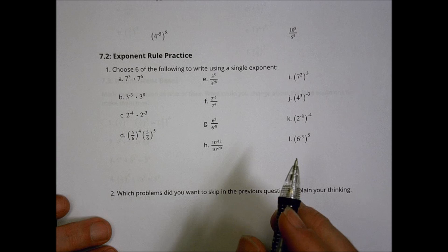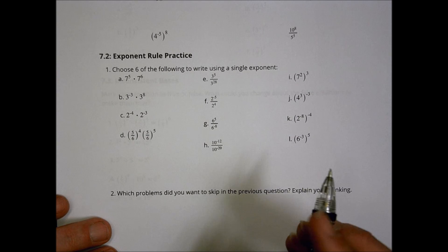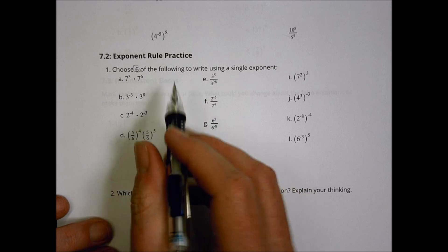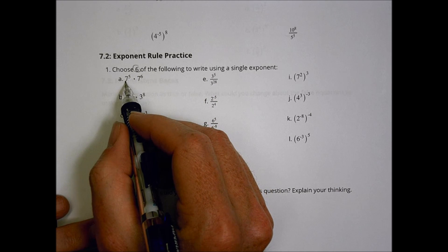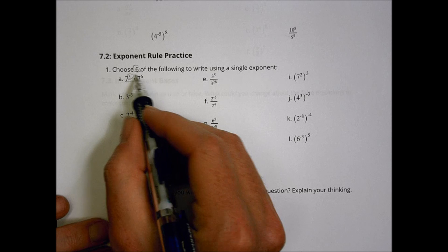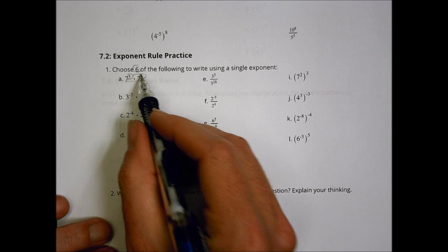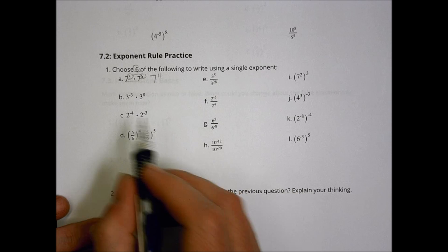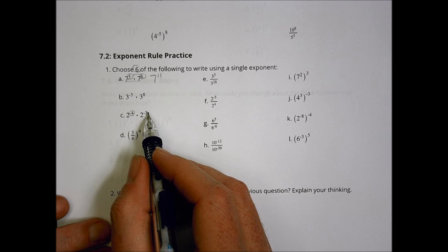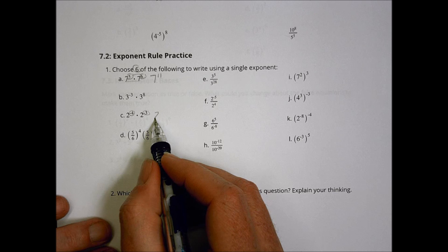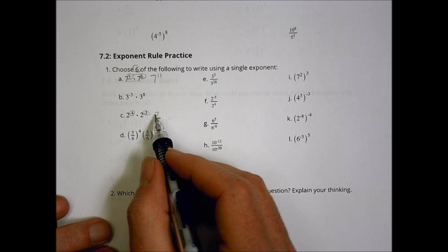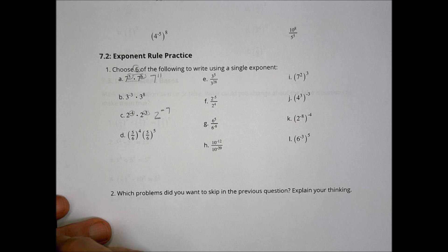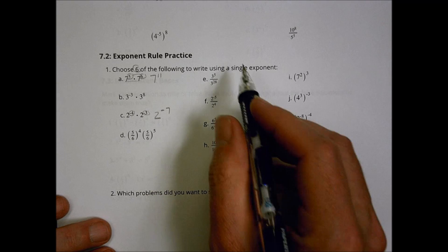Moving on to number two. It's just some practice using the different exponent rules we know. So let's do a couple of these. Here we have the same base, so we're going to add those exponents together. Five plus six is 11, so we'd say seven to the eleventh power. Over here we have a negative four and a negative three, so we add those together to get negative seven.